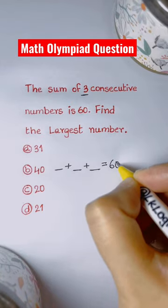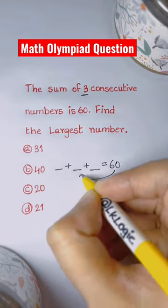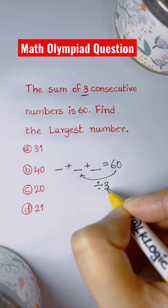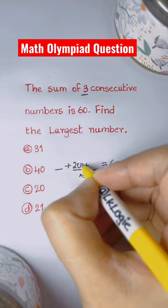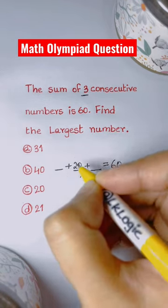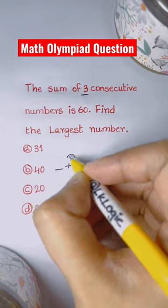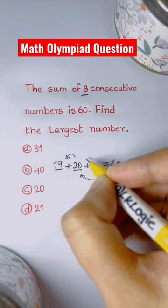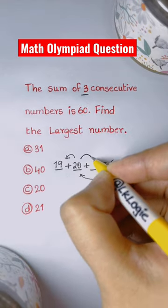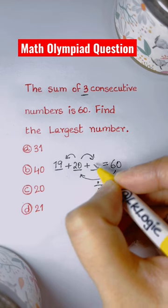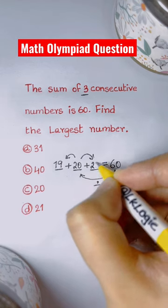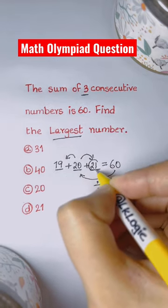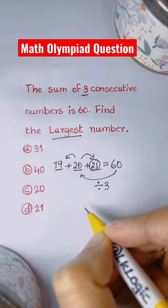Let's divide 60 by 3, as there are three consecutive numbers. We get 20. The first consecutive number lesser than 20 is 19, and the next is 21. Among the three, the largest number is 21. That's your option D.